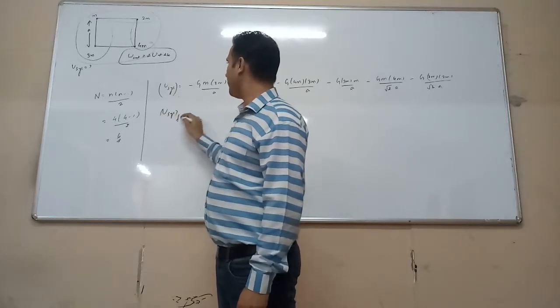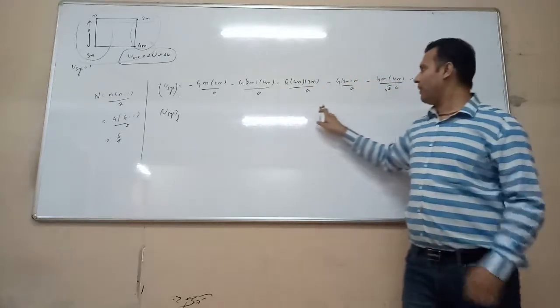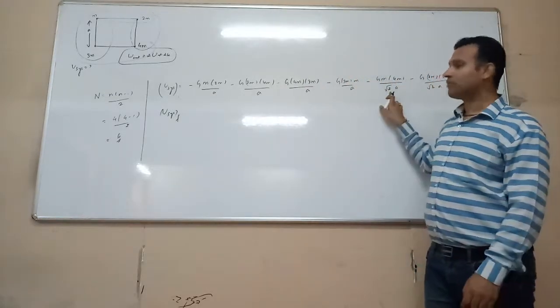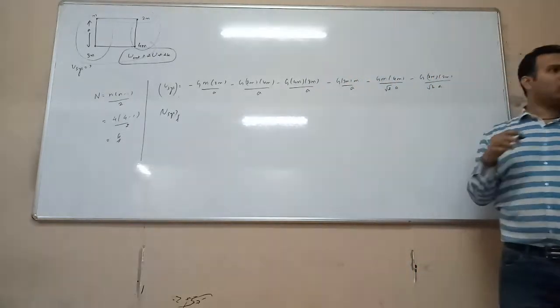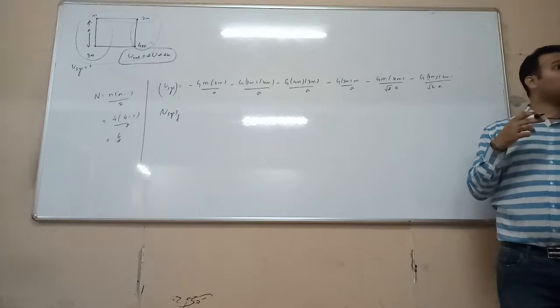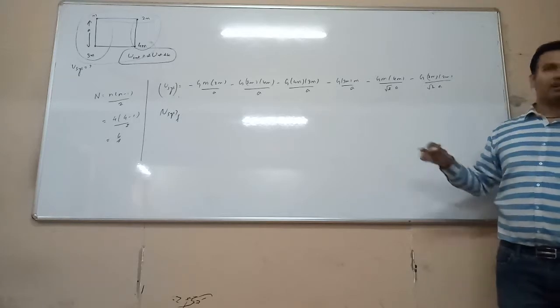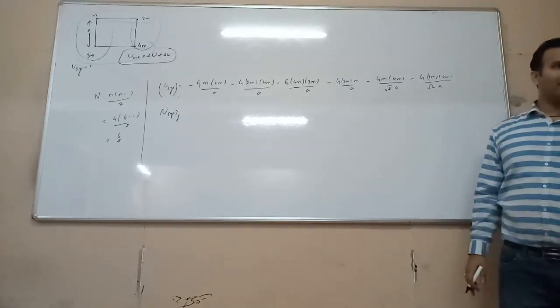We will use the diagonal distance 2a in the calculation of the potential energy terms for the diagonal pairs.